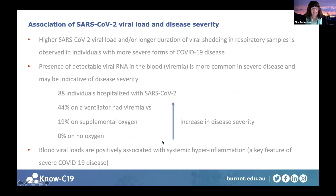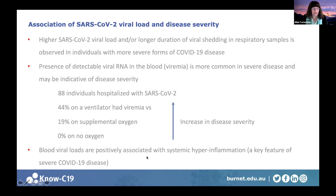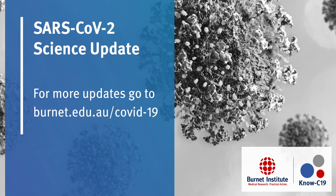Turning to disease severity: some studies show that higher SARS-CoV-2 viral load and/or longer duration of viral shedding in respiratory samples is observed in more severe COVID-19 cases. A study published in Nature Communications found that detectable viral RNA in the blood — viremia — is more common in severe disease. In 88 hospitalized individuals, 44% on a ventilator had viremia versus 19% on supplemental oxygen versus none on no oxygen. Another study showed blood viral loads are positively associated with systemic hyperinflammation, a key feature of severe COVID-19, suggesting that detectable viremia is a poor prognostic sign.